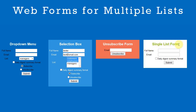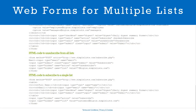The last form is a single list form. Users are not given a choice of which list they would like to subscribe to. Instead, the list is named in the form. Here we can see that the customers list is hard coded into the form.